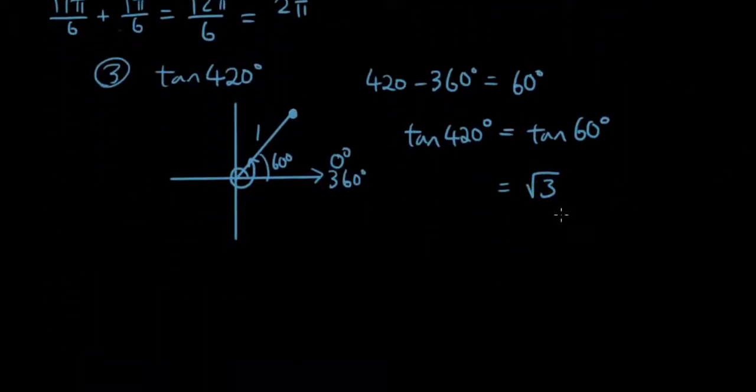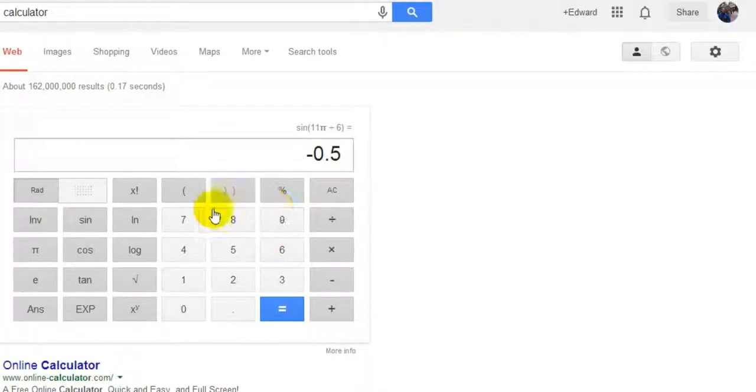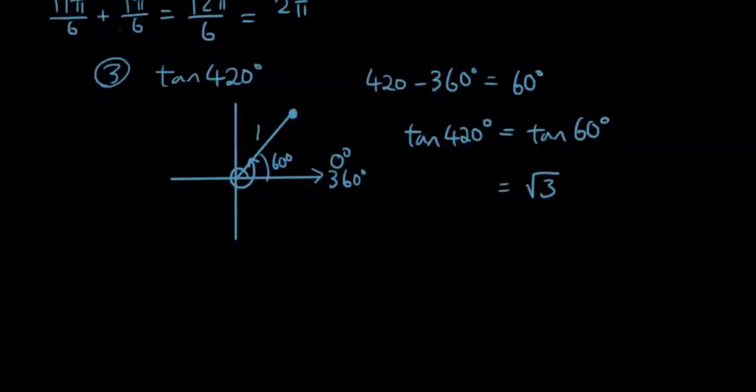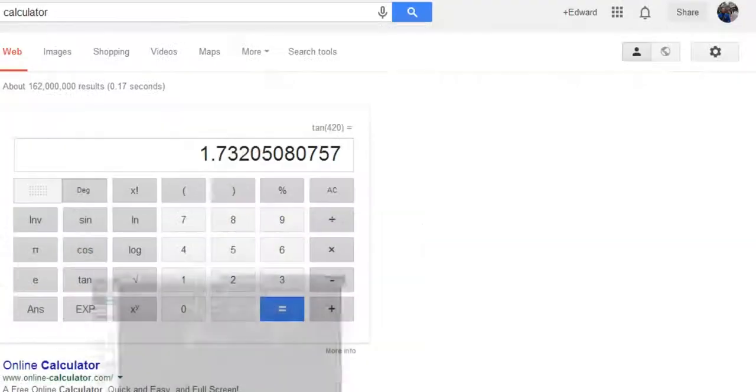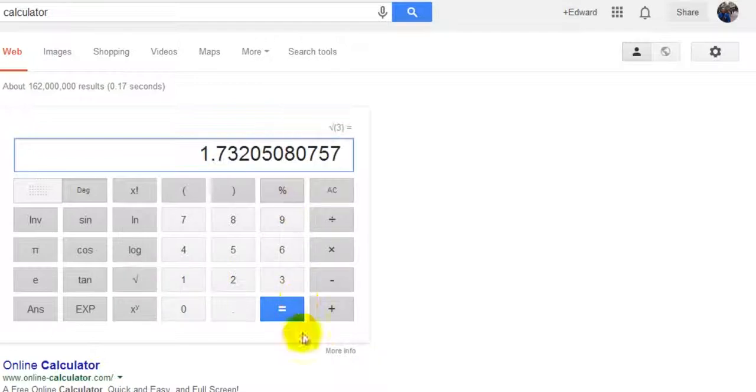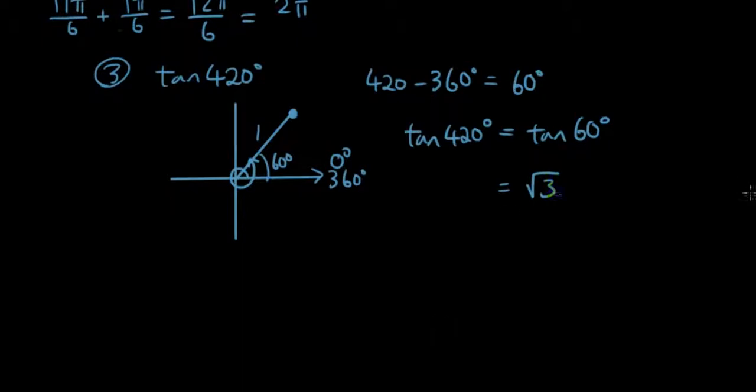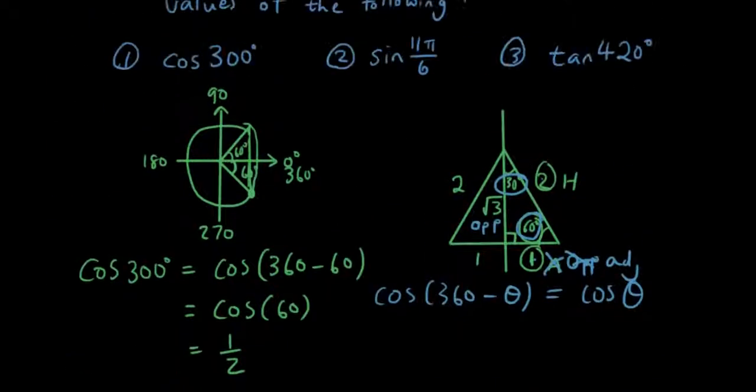So let's try that. So tan 420, this time I won't enter it wrong. So we got on degrees, tan 420, put it in the calculator. And we got 1.73, and then let's try the square root of 3 is 1.73 as well. Okay, so that is the answer to these three questions. Hopefully you guys were able to work them out.